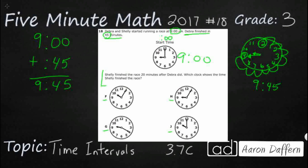This is the other part. So that's the tricky part, guys, is when you do the initial addition, and you think you have the answer of 9:45, and you don't find it, don't just guess. Let's keep reading. Let's see if there's something we missed, and there was something we missed. Shelly finished the race 20 minutes after Debra. So Debra finished, let me write this right here. Here's Debra. Debra finished at 9:45.